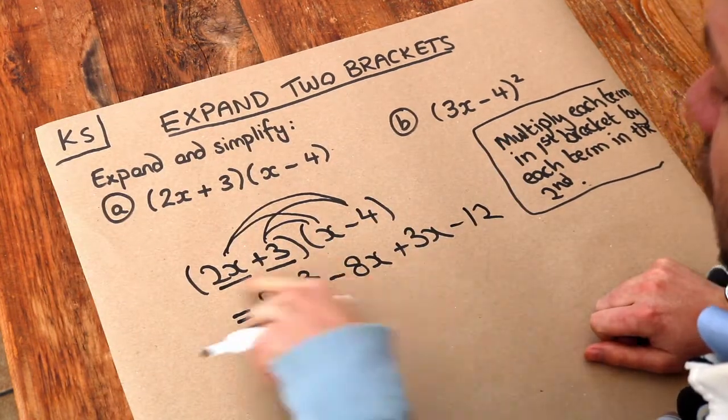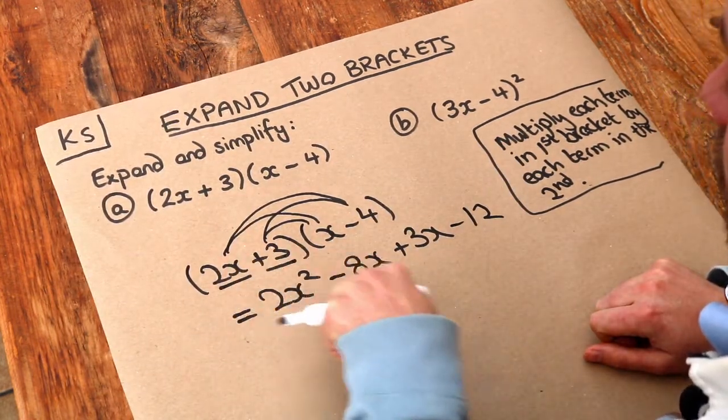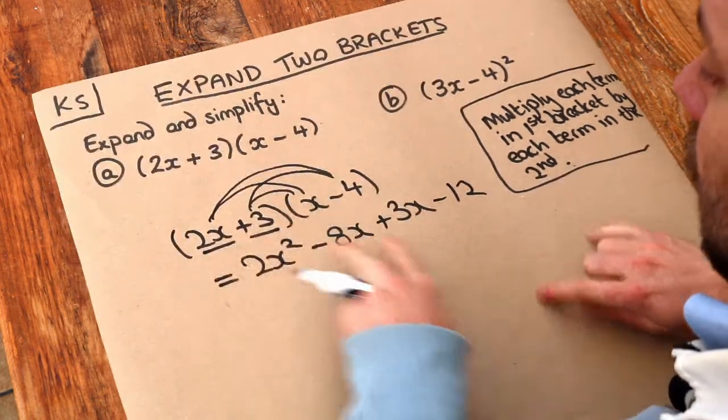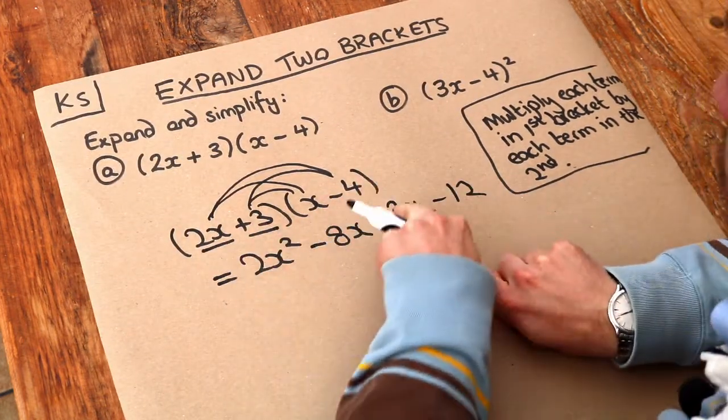So basically we've got all the different combinations of choosing one thing from this bracket and one thing from this second bracket. And if you've got two things in each bracket you'll end up with four terms.